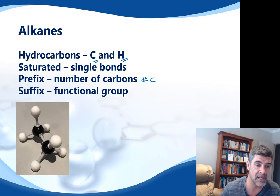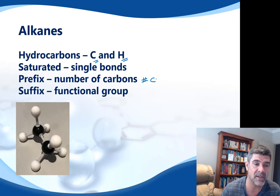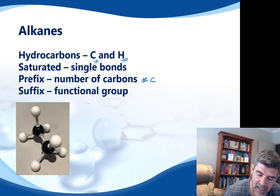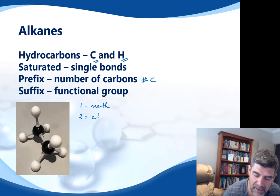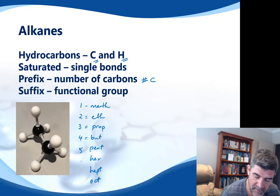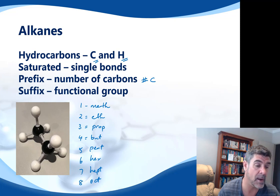The prefix is an indication of the number of carbon atoms. We need to count the number of carbons in the longest continuous chain. If there are side chains, you can't rejoin the main chain — it must be one continuous line of carbons, and whatever number that is will correspond to a name. If there is only one carbon, the prefix is meth; two is eth; three is prop; four is but; then pent, hex, hept, and oct for five, six, seven, and eight. We're only expected to go up to eight carbons in length.